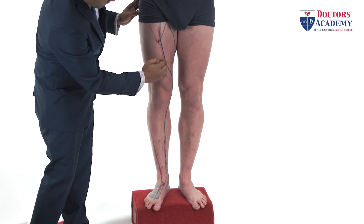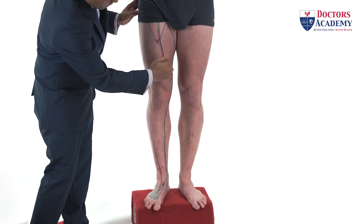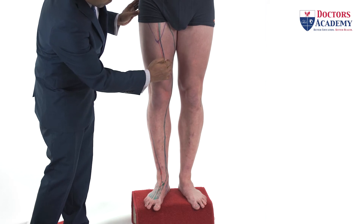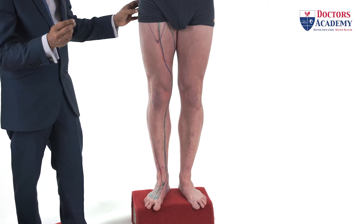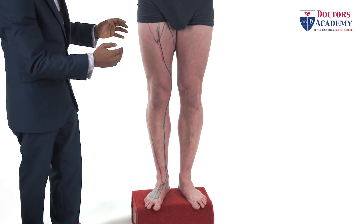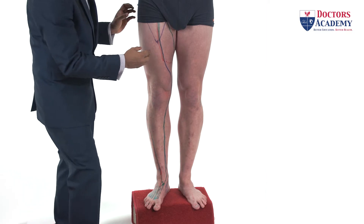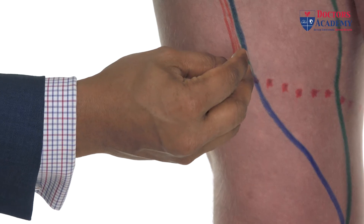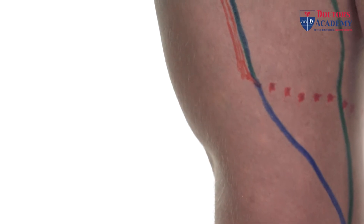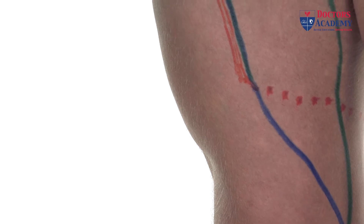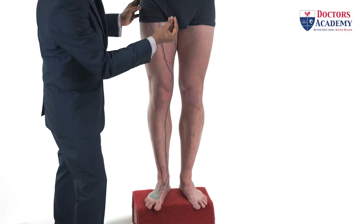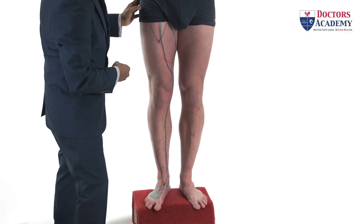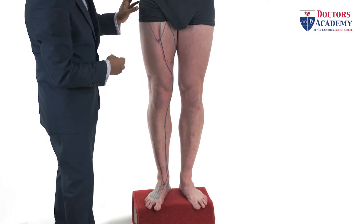Through the adductor hiatus — which is the opening between the adductor magnus and the femur — is where the femoral artery becomes the popliteal artery, and the popliteal vein ascends as the femoral vein.